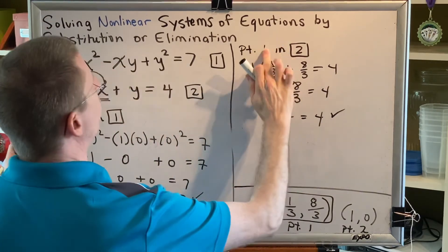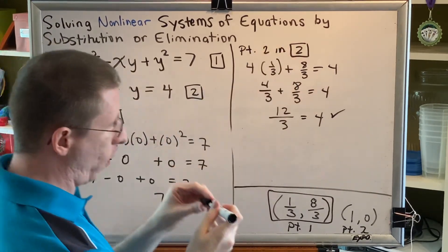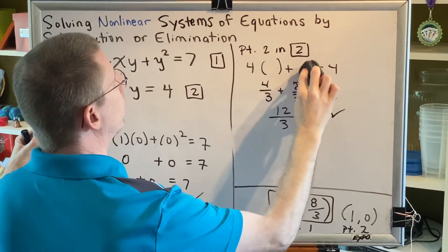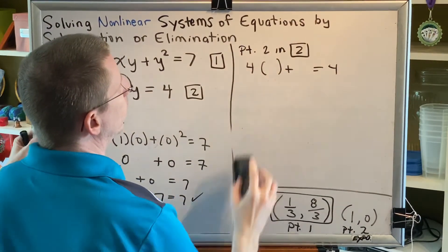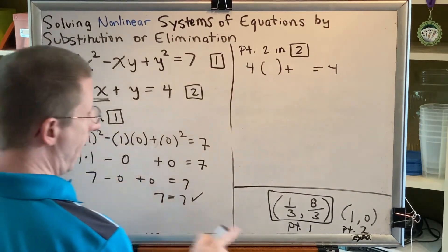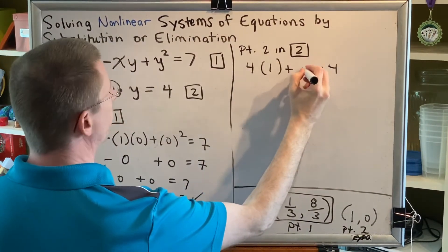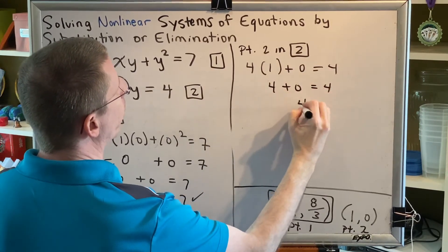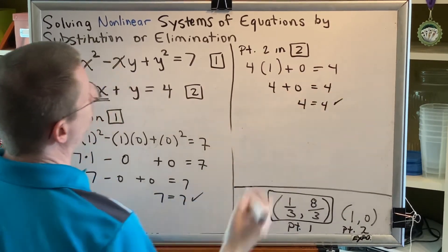Now all we have to do is put point two in equation two. Equation two is four x plus y equals four. X is replaced with one. Y is replaced with zero. So we get four plus zero equals four. Four equals four. And that is also true.